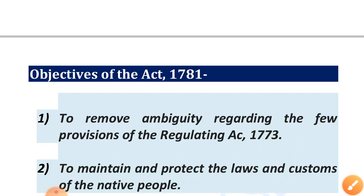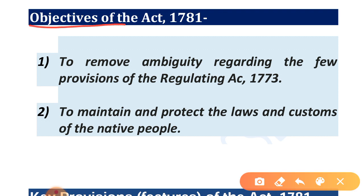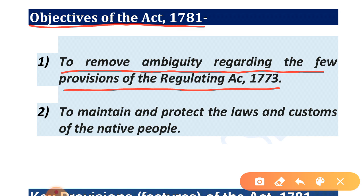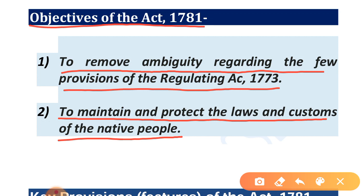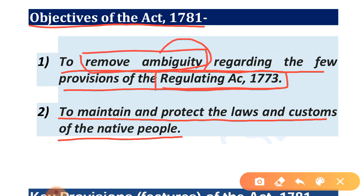The objectives of this Act 1781 were: first, to remove ambiguity regarding certain provisions of the Regulating Act 1773; and second, to maintain and protect the laws and customs of the native people. The main objective was to resolve the confusion in the Regulating Act 1773 and to protect the customs of Indian natives.